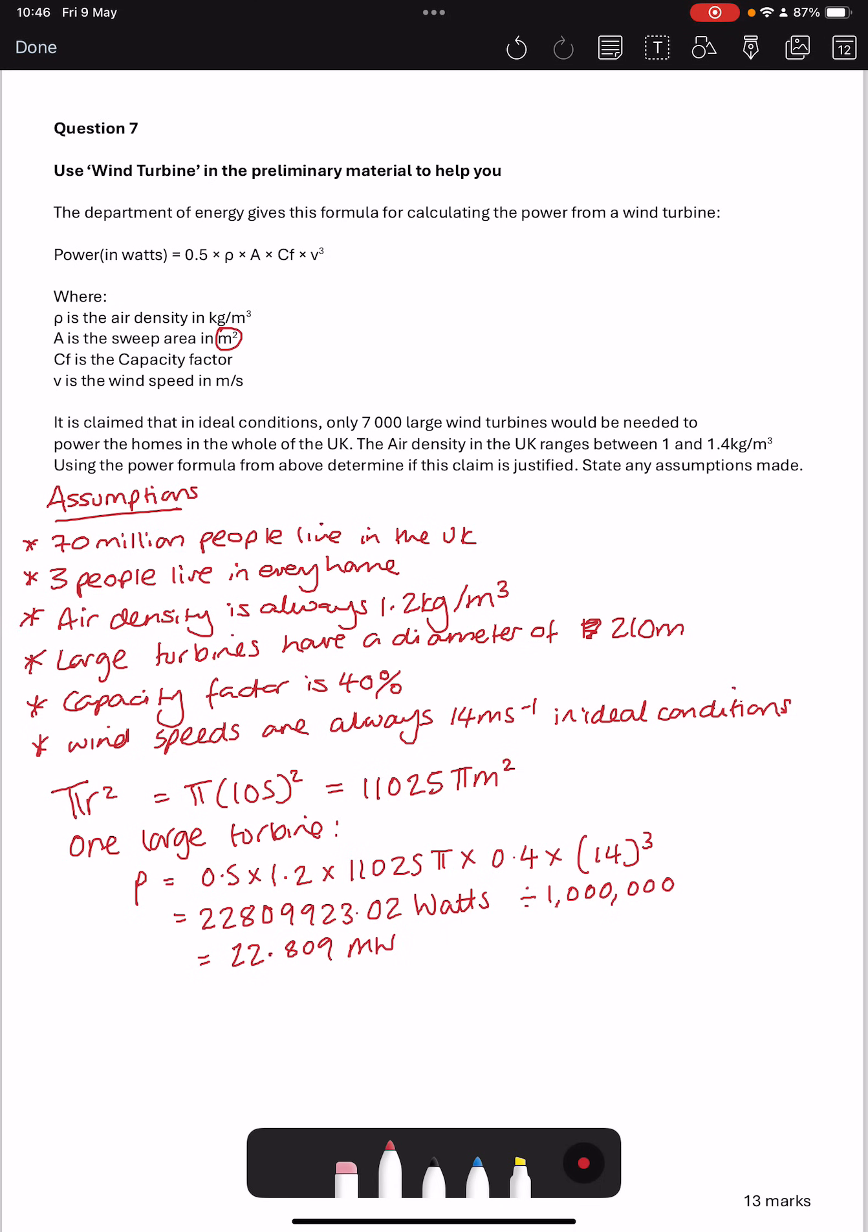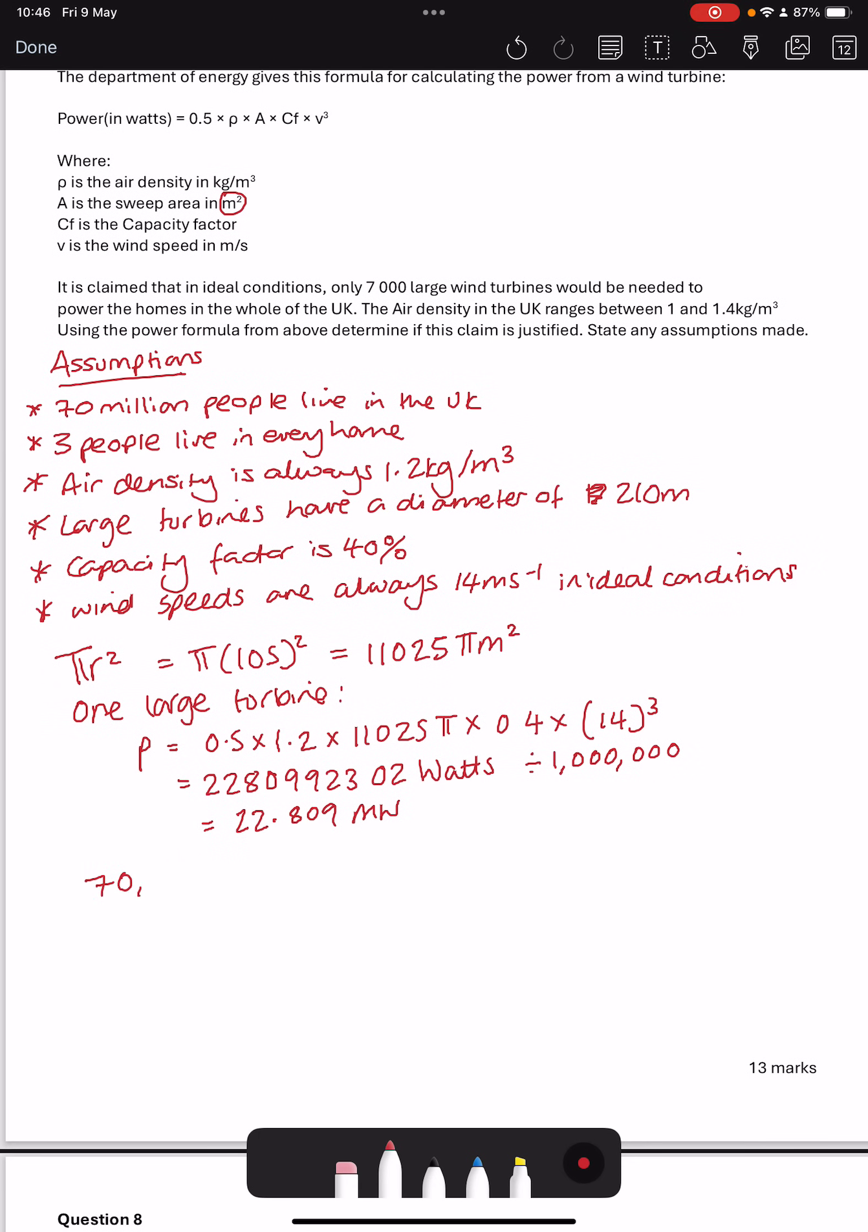They're saying that 7,000 large wind turbines are needed to power all of the homes in the UK. So we'll do 7,000 times by that number that we just had on our calculator, which gives us 159,669.461 megawatts to 7,000 turbines.